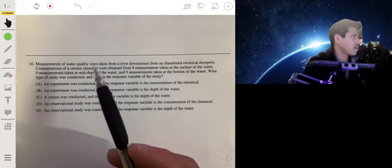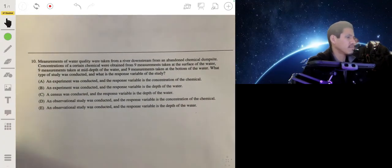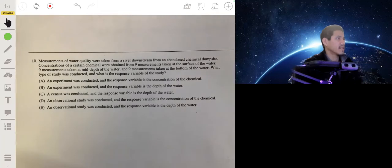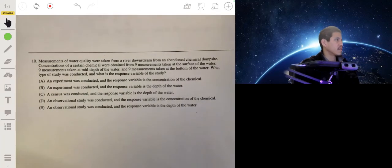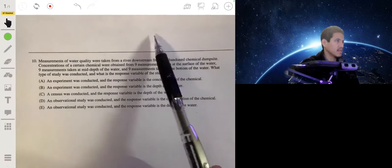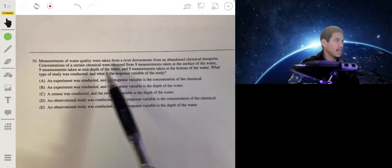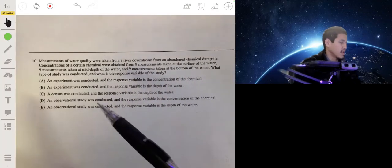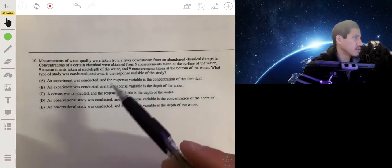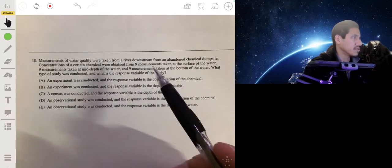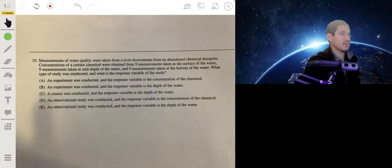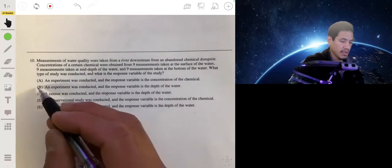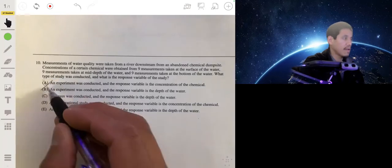For 10, measures of water quality were taken from a river downstream from an abandoned chemical dumpsite. Concentrations of a certain chemical were obtained from nine measurements taken at the surface of the water, nine measurements taken at mid-depth, and nine taken at the bottom. There's 27 total. So what type of study was conducted? This is going to be an observational study, because we didn't impose a treatment on any variable. So it's going to be an observational study. So it's not going to be A or B. We know that.